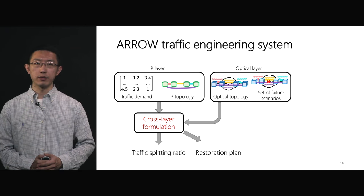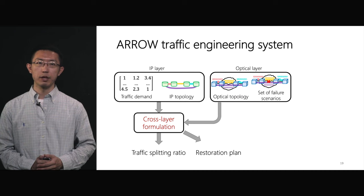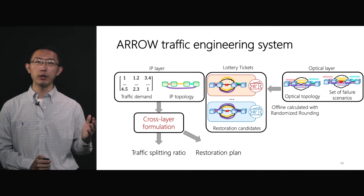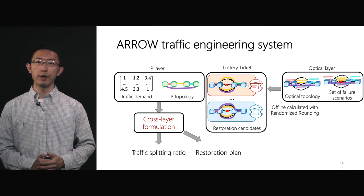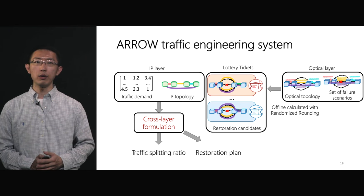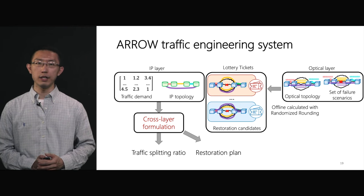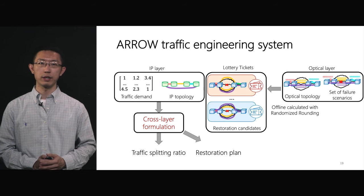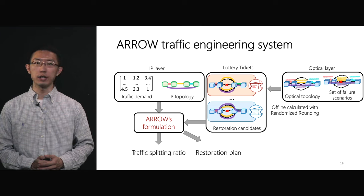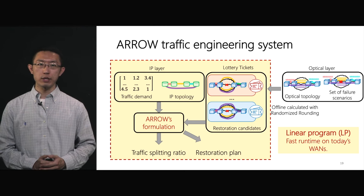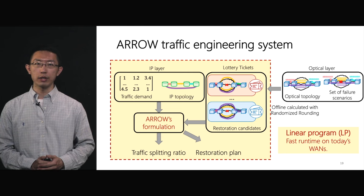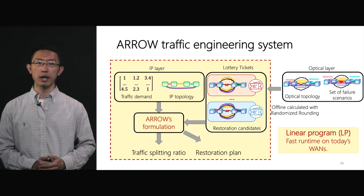With the lottery ticket abstraction, we design the ARROW traffic engineering system. We first generate multiple restoration candidates using a modified randomized rounding algorithm for each failure scenario and represent them as lottery tickets. The lottery ticket abstracts the details of wavelength reconfiguration on the optical layer and only contains essential information on how each failed IP link could potentially be restored. We then feed this abstracted information into the ARROW TE formulation on the IP layer. Because of our lottery ticket abstraction, ARROW's restoration-aware TE formulation is a linear program, and can determine traffic splitting ratios on the IP layer and the restoration plan on the optical layer with fast runtime on today's WAN topology.